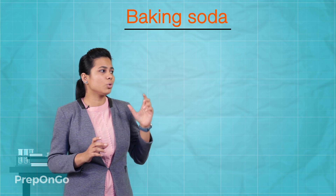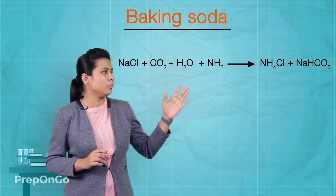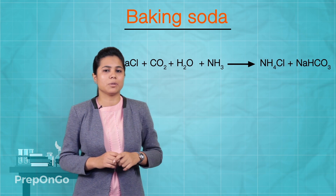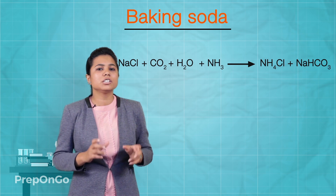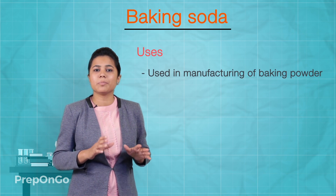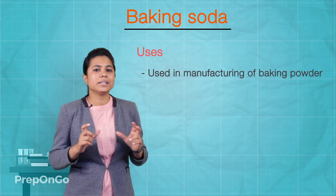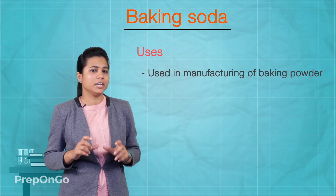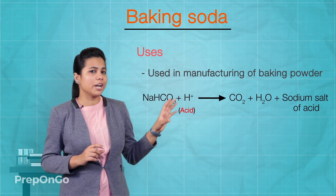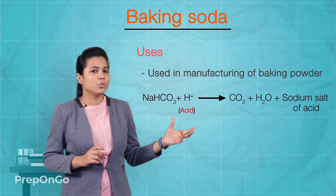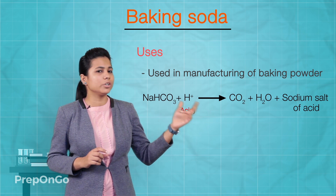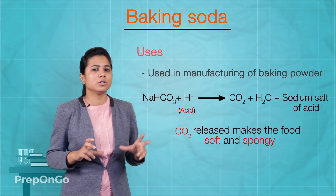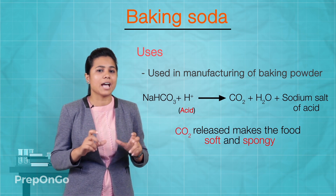Baking soda is formed when sodium chloride reacts with carbon dioxide, water, and ammonia to form ammonium chloride and sodium hydrogen carbonate. Baking soda is not only limited to cooking — it is used in the manufacturing of baking powder, where it is combined with edible acids such as tartaric acid. In that reaction, sodium hydrogen carbonate reacts with the hydrogen ion of the acid to form carbon dioxide, water, and the sodium salt of the acid. The carbon dioxide released is responsible for the sponginess and softness of cakes and baking products.